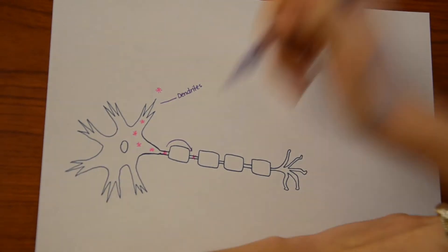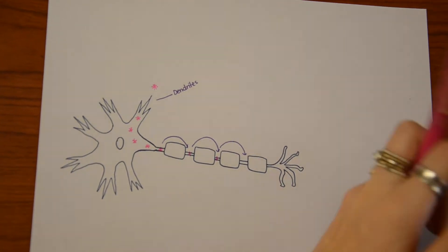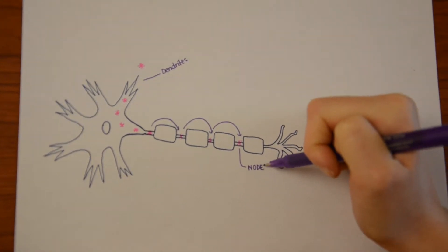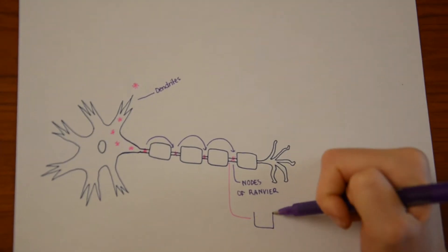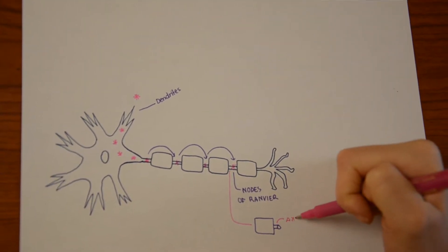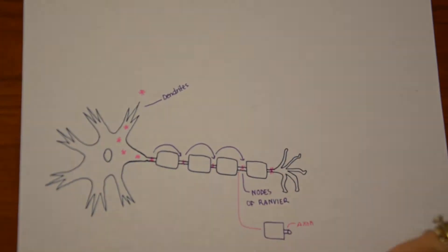Neurons receive signals from other neurons at their dendrites. The signal is passed through the cell body to the axon hillock, where it jumps along the axon at the nodes of ranvier, until it reaches the end of the axon and has an effect on the release of neurotransmitters.